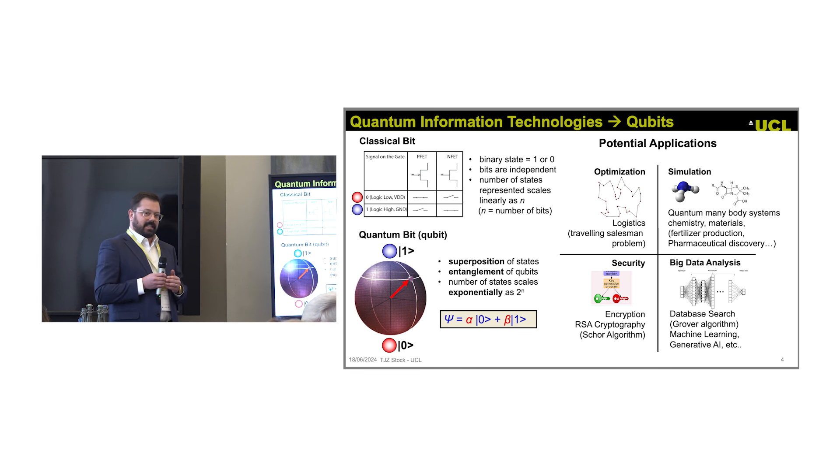The other property we use is entanglement. You can start to entangle these two-state systems and build up a more complex system, where now we have many more of these probability density terms that scale as 2^n. This is where you potentially can exploit this exponential scaling of the superposition of the qubit states, whereas in the classical computer, the number of states scales linearly with the number of bits.